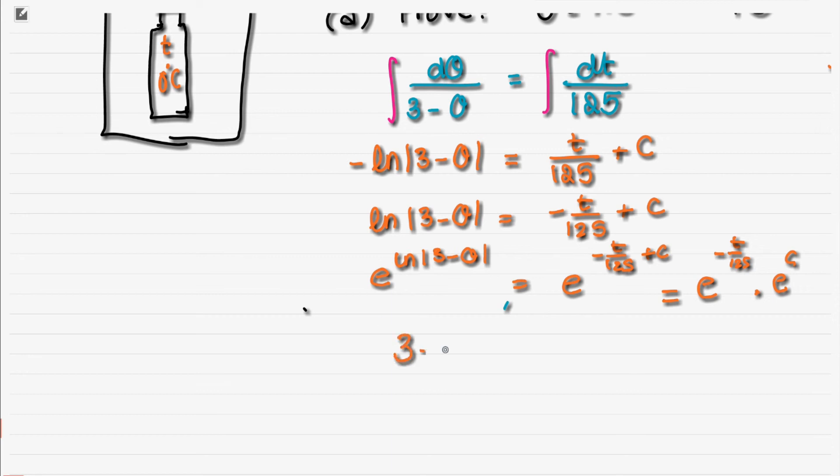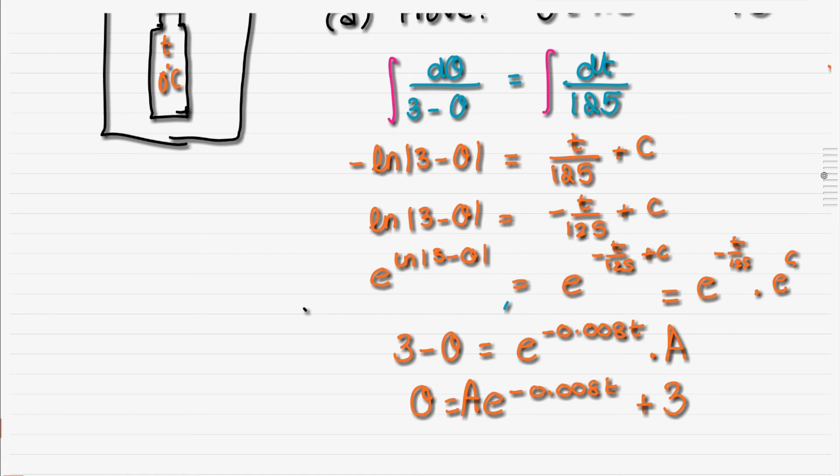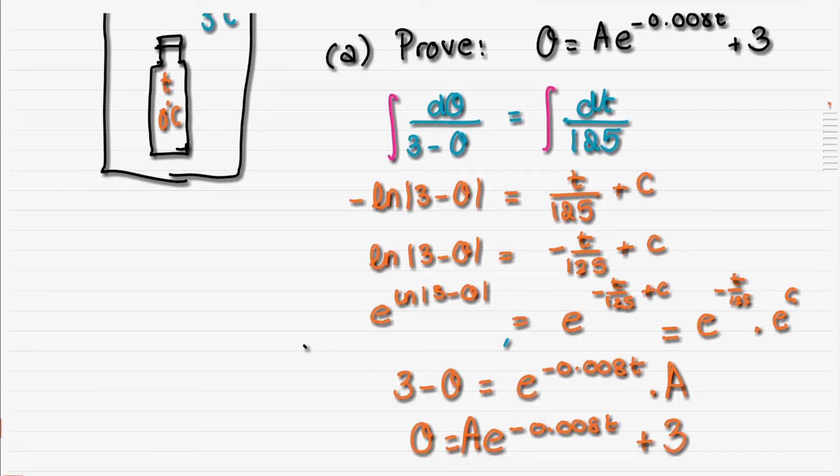Then this will become actually 3-θ, and this is going to be e^(-t/125), which is minus 0.008t, and our e^c can be any constant we can call A. Then we make θ the subject of the formula by just adding this here and taking that there, and then we're going to have e^(-0.008t) multiplied by A, and then we can simply add 3, and this will give us the formula they asked for.